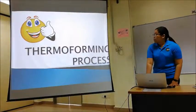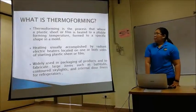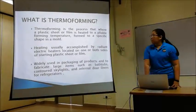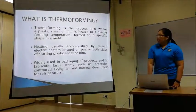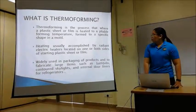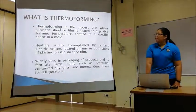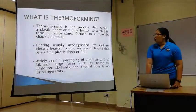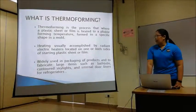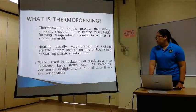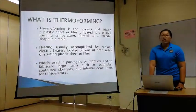Now I will proceed to the thermoforming process. Thermoforming is a process where a plastic sheet or film is heated to a forming temperature and formed to a specific shape in a mold. Usually, heating is accomplished by a radiant electric heater located on one or two sides of the starting plastic sheet or film. Thermoforming is widely used in packaging of products and to fabricate large items such as bathtubs, skylights, and the internal door liners for refrigerators.